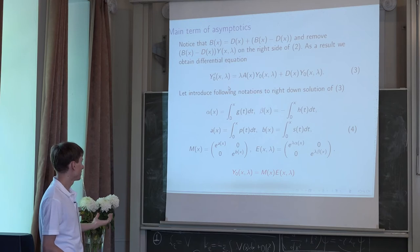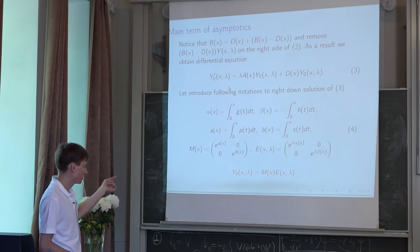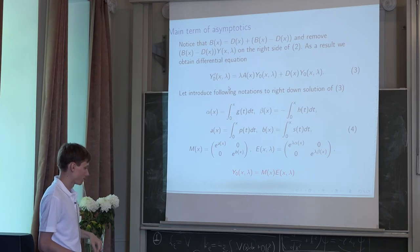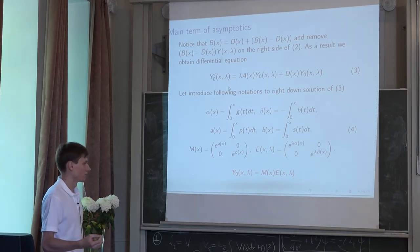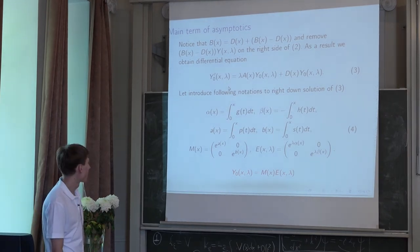And you can see it on the bottom of the slide. It is multiplication of two matrices, E(x, lambda) and M(x). And this fundamental matrix satisfies initial condition equal to identity matrix.